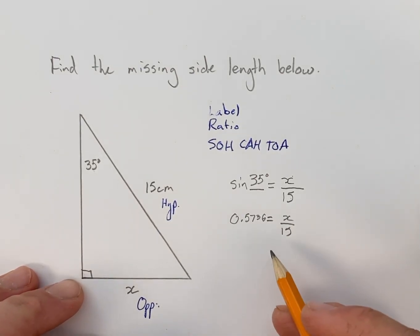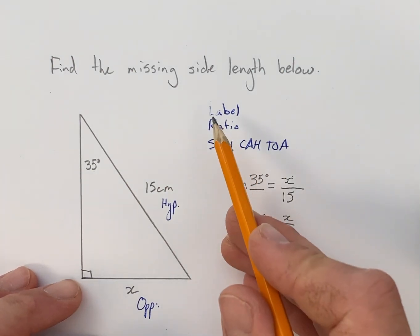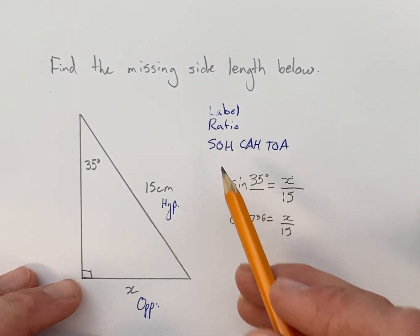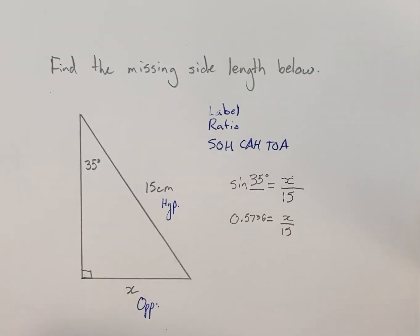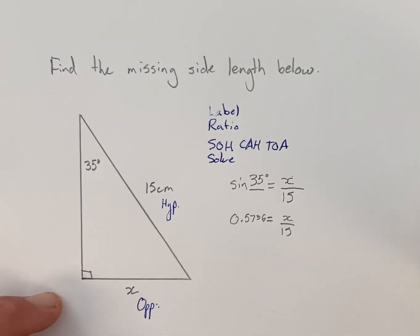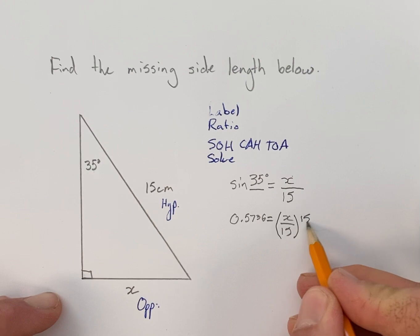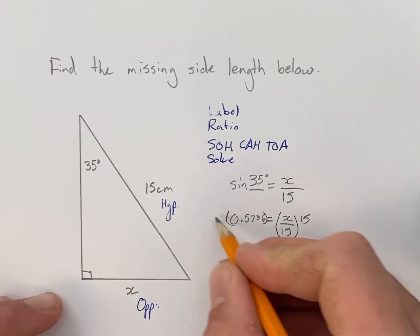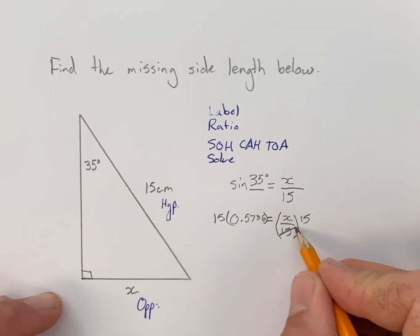And just like solving one-step equations, our goal is to get X alone. So we've labeled, we've picked the ratio, now we're going to solve. And to solve, we just multiply both sides by 15. In doing so, the 15s in the denominators cancel.